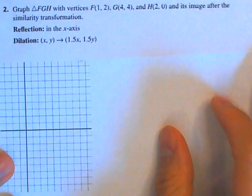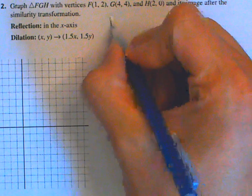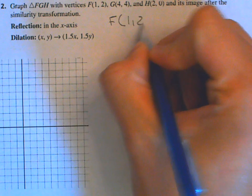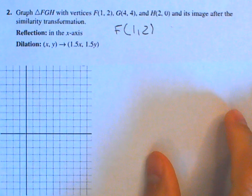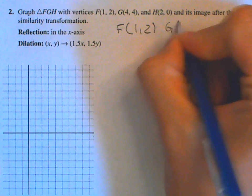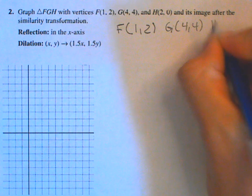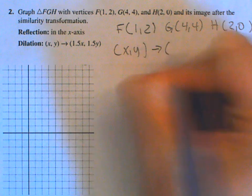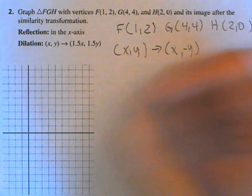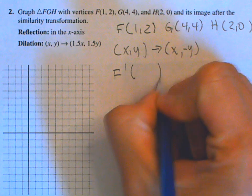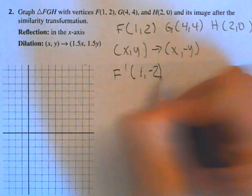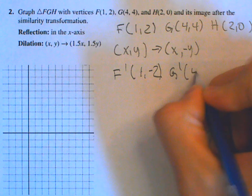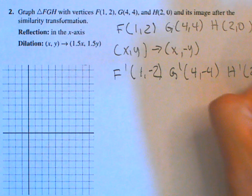For the next monitoring progress question, we have three points: F is (1, 2), G is (4, 4), and H is (2, 0). The transformation is a reflection about the x-axis — the rule is that x stays the same but y changes to its opposite. So F prime is (1, negative 2), G prime is (4, negative 4), and H prime is (2, 0).